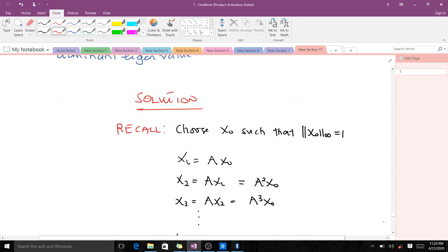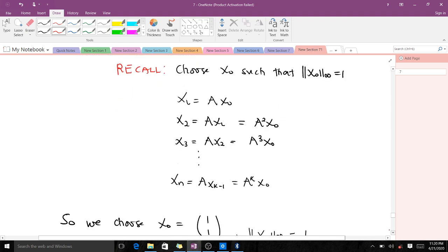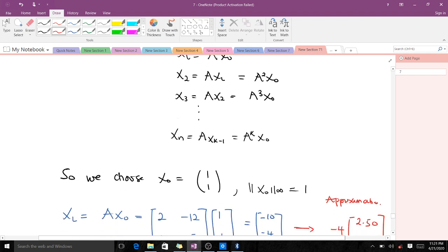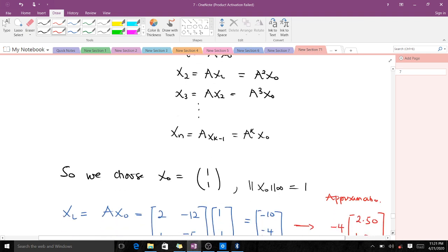Recall that when doing the iterative process, we choose x₀ such that the infinity norm of x₀ is 1. Our first iteration is x₁ = Ax₀, our second iteration is x₂ = Ax₁ = A²x₀, and x₃ up to xₙ follows. We use proper scaling to get our approximation.